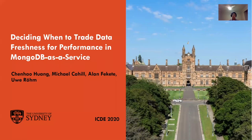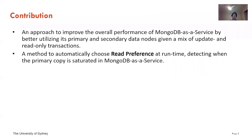I'll be starting from the contribution. In this piece of work, we present an approach to improve the overall performance of MongoDB as a service by better utilizing its primary and secondary data nodes given a mixture of updates and read-only transactions. We also present a method to automatically choose read preference at runtime.